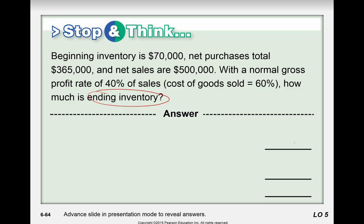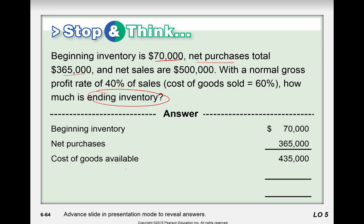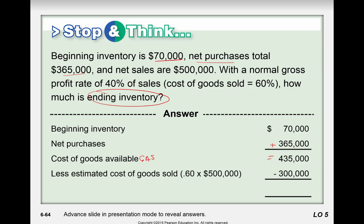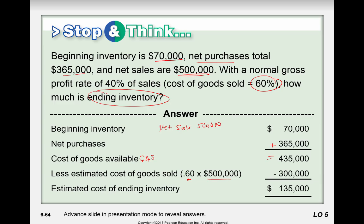Let's work through an example. Beginning inventory is $70,000, net purchases total $365,000, giving goods available for sale of $435,000. With net sales of $500,000 and a normal gross profit percentage, we calculate estimated cost of goods sold as $300,000. That leaves us an ending inventory of $135,000. The $200,000 gross profit represents 40% of net sales, which is our gross profit — a solid result confirming the estimate.